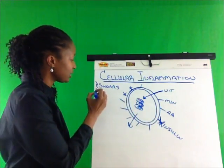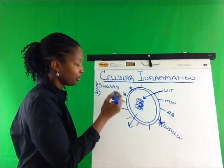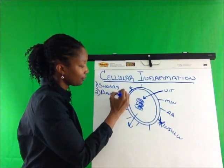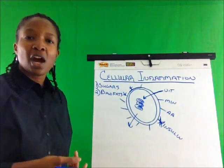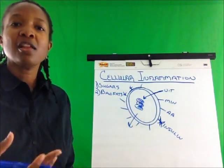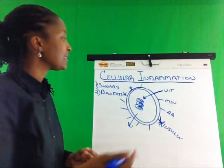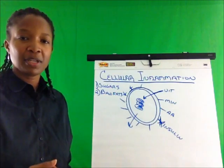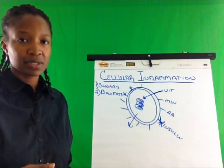Now let me move on to the number two cause of cellular inflammation and that's bad fats. Good fats are coconut oil, olive oil. These are all fats that actually nourish and provide a perfect environment for that cell and cell receptor.